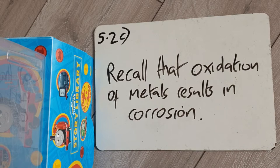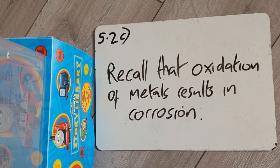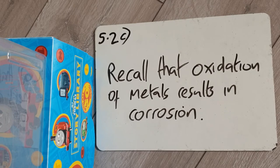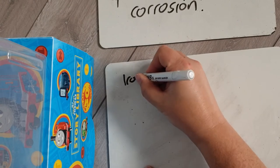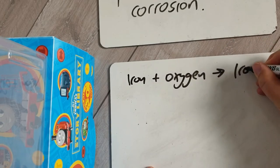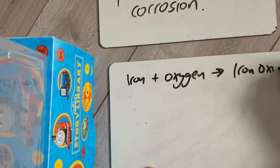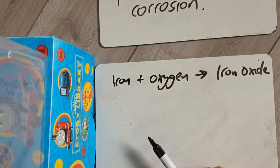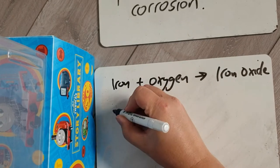First point: recall that oxidation of metals results in corrosion. Oxidation means adding oxygen — it has another meaning of losing electrons, but that's for another day. So if we have iron and we add oxygen, iron plus oxygen makes iron oxide, also known as rust. We've added oxygen and corroded the metal.